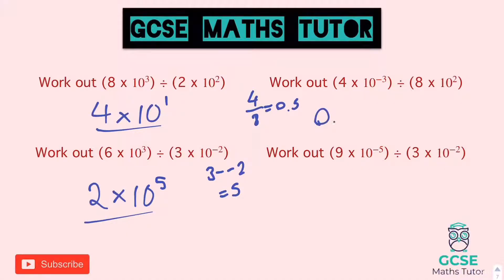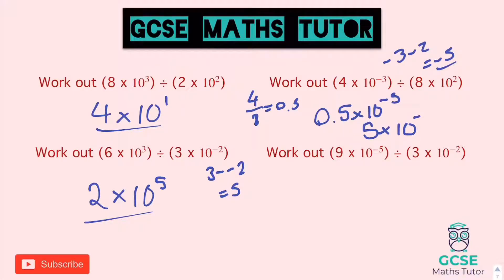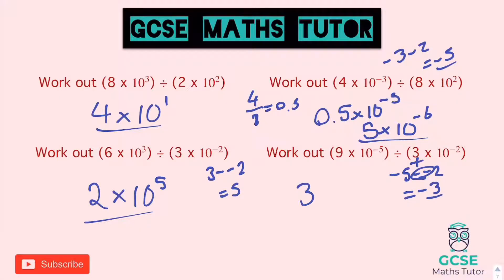Third: 4 divided by 8 is 0.5. Powers: negative 3 take away 2 equals negative 5. So 0.5 times 10 to the negative 5. Making the number bigger gives 5, so the power goes down to negative 6. Final answer: 5 times 10 to the negative 6. Fourth: 9 divided by 3 is 3. Powers: negative 5 take away negative 2 turns into negative 5 plus 2, which is negative 3. Final answer: 3 times 10 to the negative 3 — already in standard form.